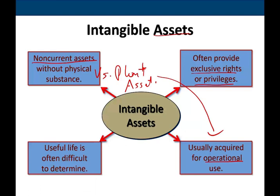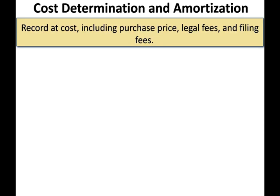The useful life of an intangible is often difficult to determine. Generally speaking, if there's a contract, you can follow the contract. But sometimes you don't know the life of the intangible — those are called unlimited life intangibles. When we acquire an intangible, we record it on the books at cost. The costs include the purchase price, legal fees, and filing fees. If they are created internally, we only capitalize the legal fees and the filing fees.